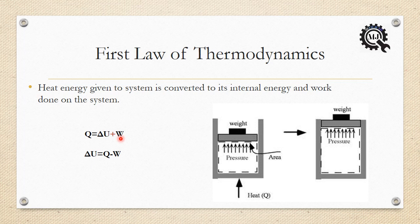Here we have Q equals delta U plus W, where W is work done. Work done equals force into displacement. Heat given to the system is converted to its internal energy and work done by the system. Therefore, delta U equals Q minus W — internal energy equals heat minus work done.